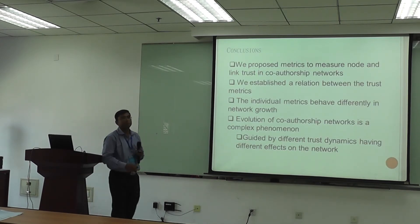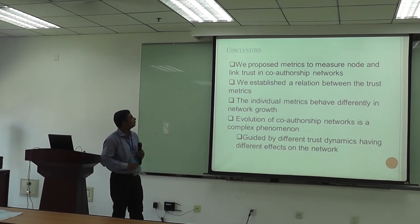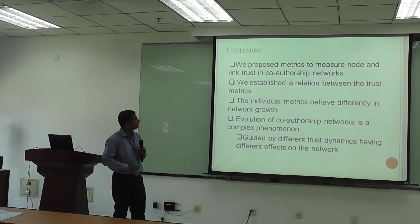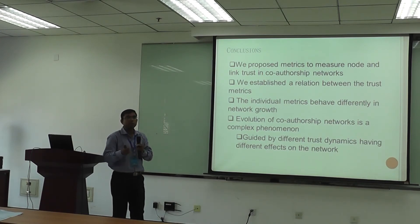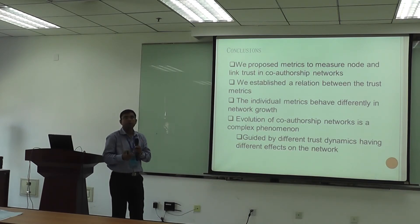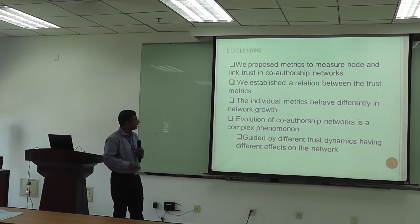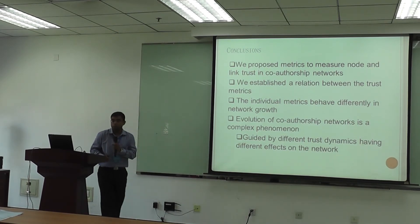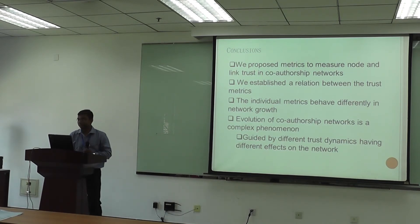To conclude: we have proposed several metrics to measure node trust and link trust in co-authorship networks and established relations between the trust matrices. The individual matrices behave differently in network growth. We find that the evolution of co-authorship networks is not driven by a single phenomenon — many authors have observed power law behavior as preferential attachment — but it is guided by several different trust dynamics, each having different effects on the network. Thanks a lot.